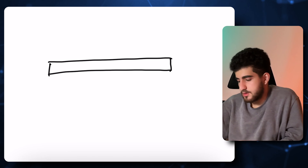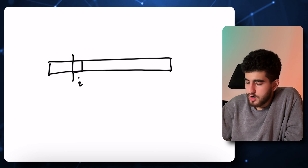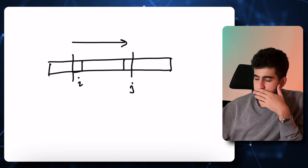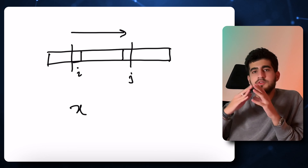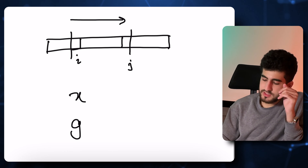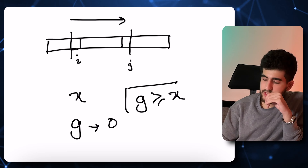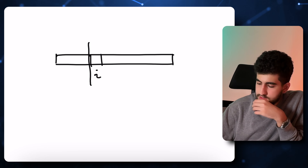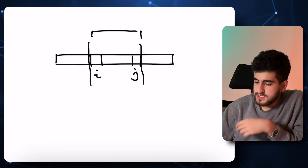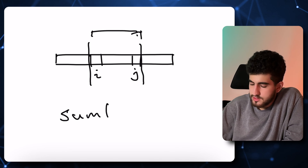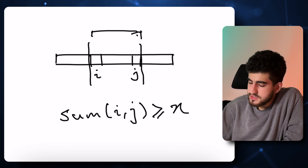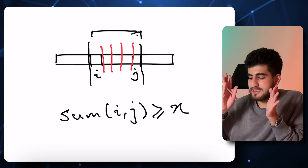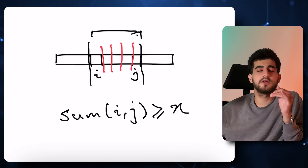Problem C, Hangu games. For each i, we consider which j's are there such that if we start from i and go to j, the final answer is not going to be 0. We always have some value x, and wherever our sum reaches x, we set g to 0 again. So if starting from i I find the first j such that the sum of the interval from i to j is greater than or equal to x, all intervals starting from i ending before j are good, but the interval ending at j is bad because it turns to 0.